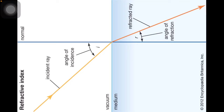When light travels obliquely from one transparent medium to another, the direction of the ray changes. For a given pair of media — for example, first medium air and second medium water — the change in direction of light is related to the refractive index.